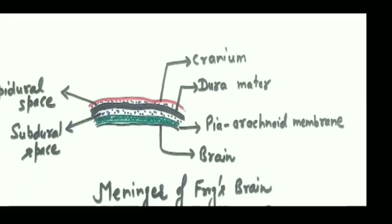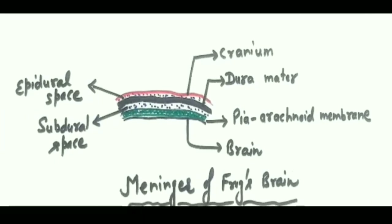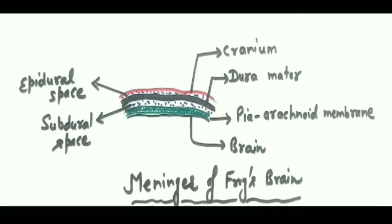The brain of frog is covered by two meninges. The outer black one is the duramater, and the inner green one is the pyarachnoid membrane. Duramater is the outer thick layer made up of fibrous connective tissue. The inner layer is formed by the fusion of piameter and arachnoid membrane, called the pyarachnoid membrane. The space between duramater and pyarachnoid membrane is the subdural space, while the space between duramater and cranium is the epidural space — epi means above, sub means below. These two spaces are filled with cerebrospinal fluid.